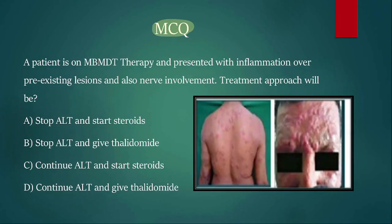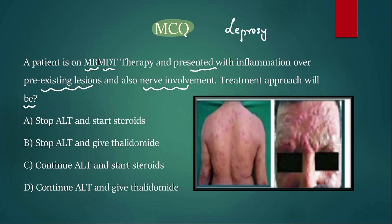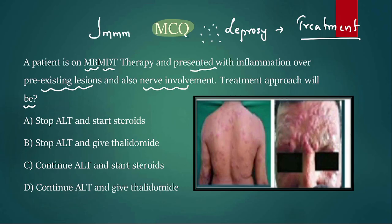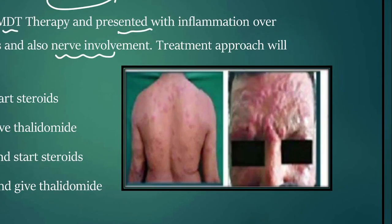Moving on to the second MCQ: a patient is on multi-drug therapy for multi-bacillary leprosy and presents with inflammation of pre-existing lesions and nerve involvement. The patient is already on treatment, and while on treatment the leprosy bacilli die. The immune response to dying bacilli is called a lepra reaction.